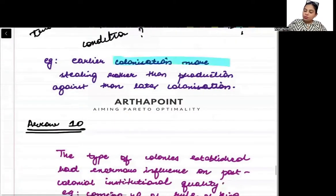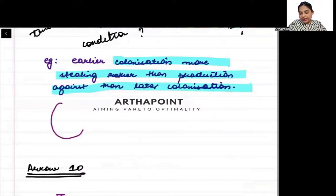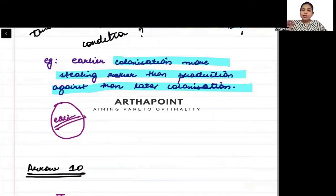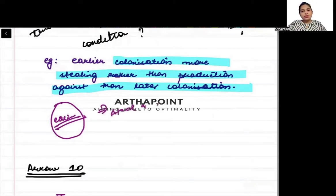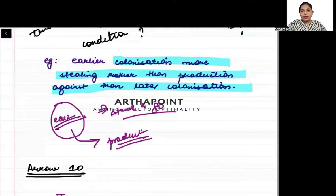Early colonization was more about stealing rather than productive engagement, compared to later colonization. During the earlier periods, when countries first started capturing others, it was more of steal and go. But during the later period the colonization pattern was very different — it was more of production within the country, more of staying within the country, like what happened in India.